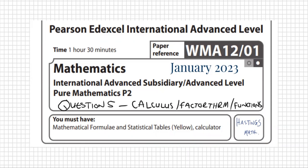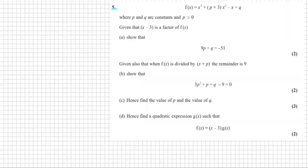Question 5 gives you this function with P's and Q's in it. P and Q are constants and P has to be larger than zero. It gives you that X minus 3 is a factor of your function. And then it wants you to show this. If X minus 3 is a factor, then show this. So let's take a look. Question 5a.